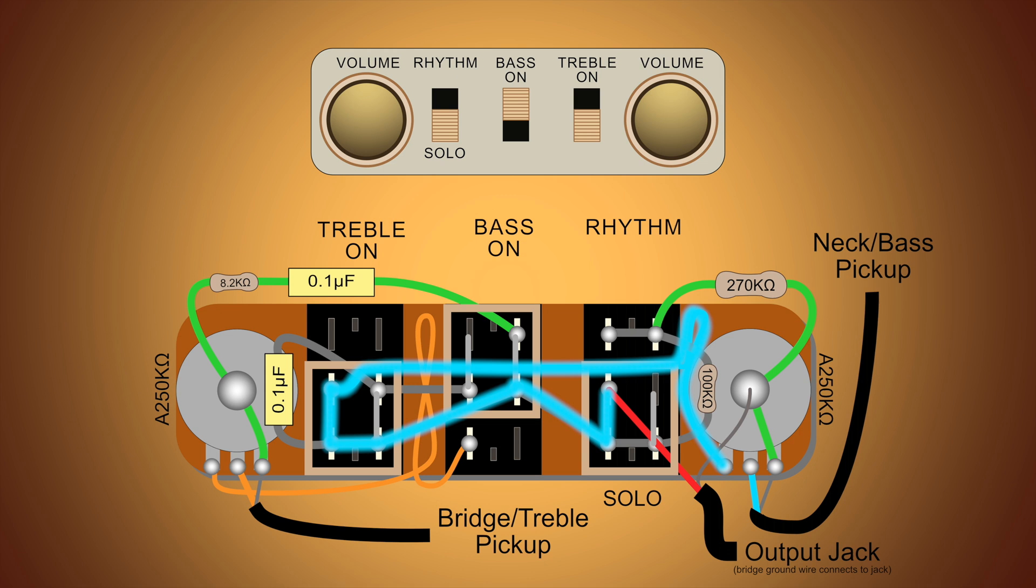But just like with the bridge pickup, there's more to the story. When the neck signal path connects to a middle terminal of the middle switch, the switch pole also connects to ground. And that connection to ground includes a capacitor and a resistor.